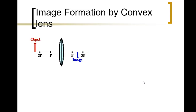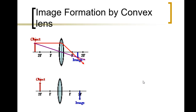Looking at examples: when the object is beyond 2F, the image is located between F and 2F. When the object is at 2F, drawing the first and second rays shows that the image is also inverted and located at 2F on the other side.